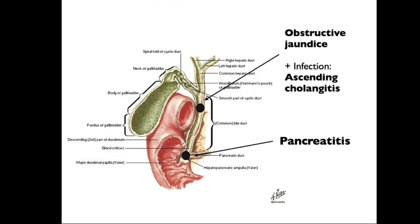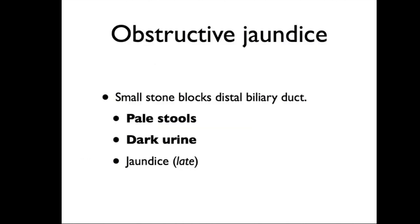Gallstones can also block the outflow of the pancreatic duct, leading to increased pressure within the pancreas. Because the pancreas contains digestive trypsins and proteases, cells can rupture, releasing these enzymes and causing pancreatitis — which we'll cover in a separate podcast. If the stone gets stuck in the biliary tree, it can also cause obstructive jaundice.